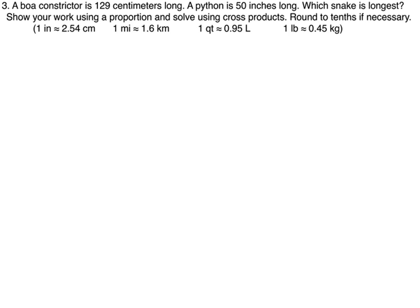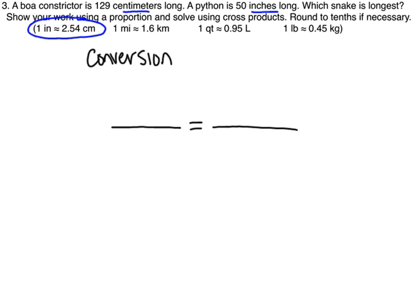Number three. A boa constrictor is 129 centimeters long, and a python is 50 inches long. Which snake is longest? Show your work using a proportion and solve using cross products. So we need to set up a proportion as our very first step. The first fraction is going to be the conversion. For this problem, I'm going to use the one with centimeters and inches. So 2.54 centimeters is equal to one inch.